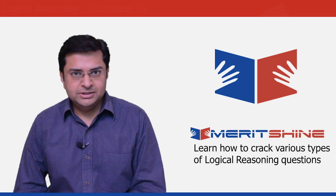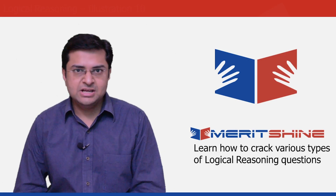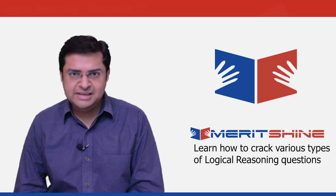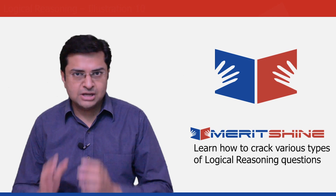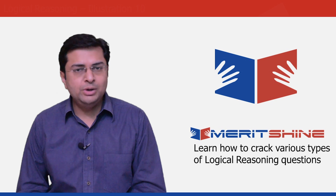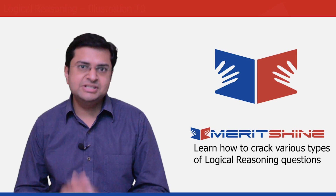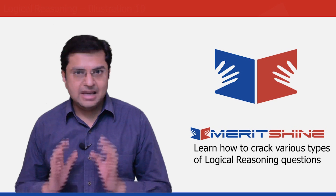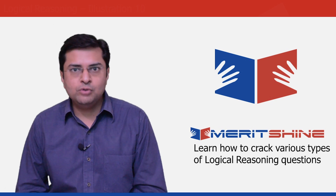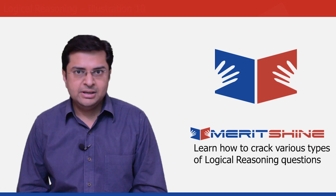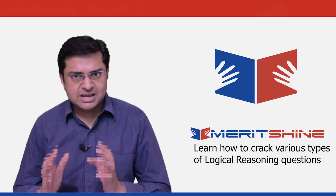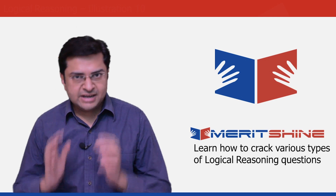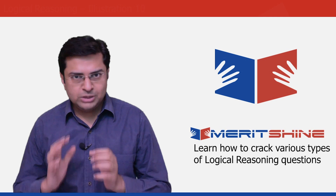Hi, welcome back. This is the first time in this lecture series that we are going to discuss a problem on linear seating arrangement. Though these problems are generally easier than circular seating arrangement problems, you need to be careful with the directions given in the question. The given conditions and their language are capable of causing some confusion regarding the orientation of objects. So let's take one such problem and understand the concept through it.